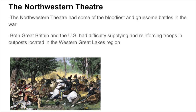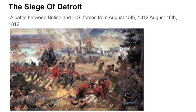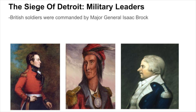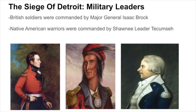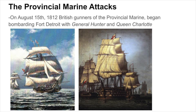One of the first battles in the Northwest was the Siege of Detroit. The Siege of Detroit was a battle between British forces and U.S. forces from August 15th to August 16th in 1812. British forces consisted of soldiers commanded by Major General Isaac Brock, along with Native American warriors led by Shawnee leader Tecumseh. U.S. forces consisted of soldiers commanded by Brigadier General William Hull. On August 15th, 1812, British gunners of the Provincial Marine began bombarding Fort Detroit with two ships, General Hunter and Queen Charlotte.